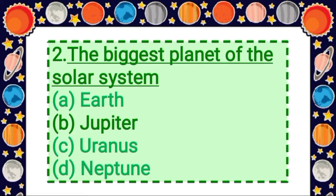Next question: the biggest planet of the solar system. Option A: Earth, Option B: Jupiter, Option C: Uranus, Option D: Neptune. Answer is option B, Jupiter — the biggest planet of the solar system is Jupiter.